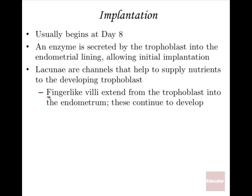Finger-like villi extend from the trophoblast into the endometrium, continuing to develop to bring nutrients via diffusion from the mother's blood flow. The blood cells that develop in this early new life have hemoglobin with a higher affinity for oxygen than the maternal blood cells, meaning the baby's early red blood cells are an even greater magnet for oxygen than the mother's.